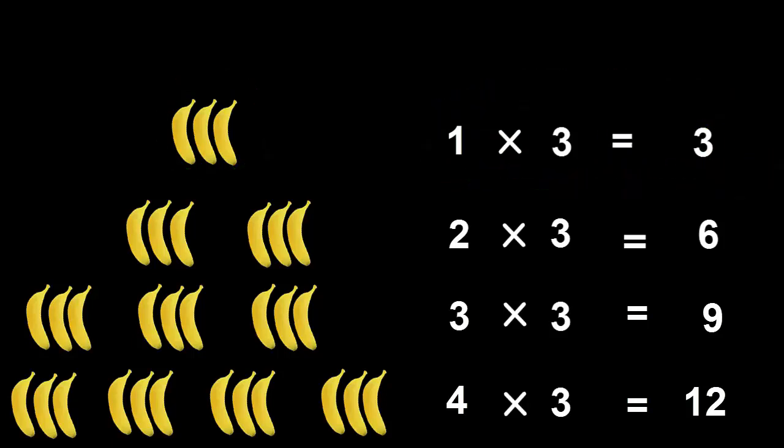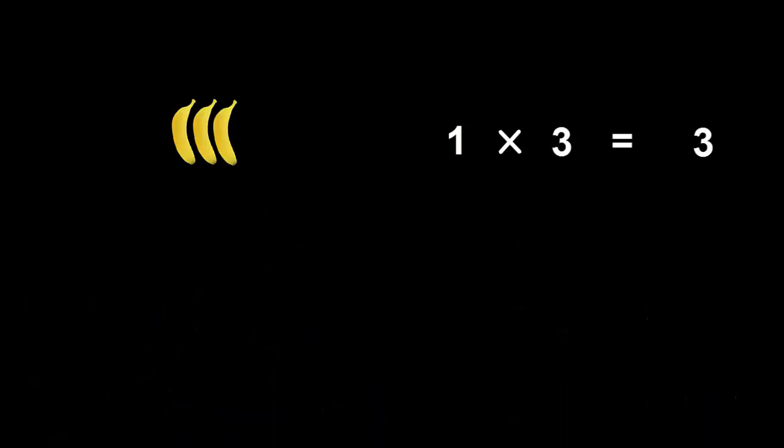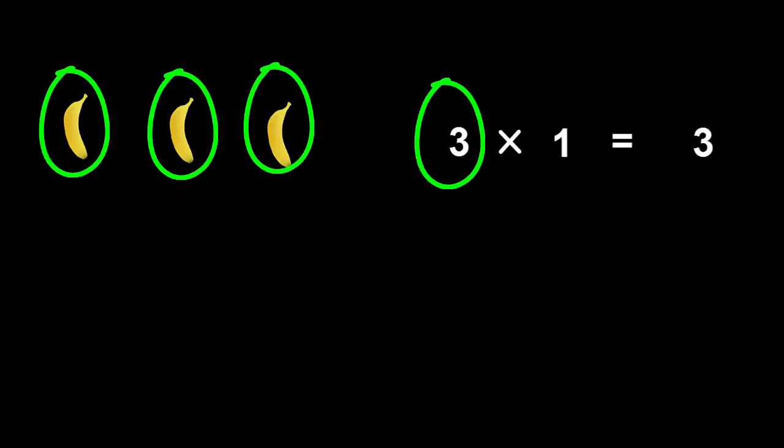This is a special case where one multiplied by a number just equals the number itself. One multiplied by five equals five, and so on. Of course, we can also swap them around to say three multiplied by one equals three. This means three lots, with each lot containing only one banana each.